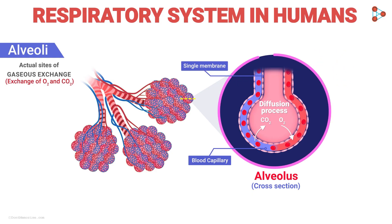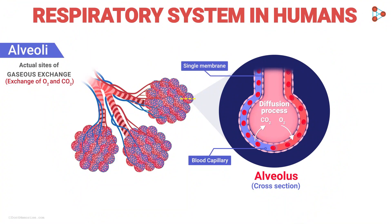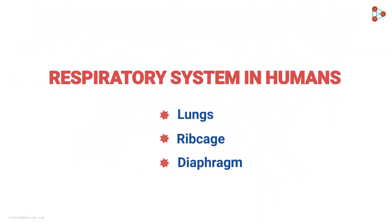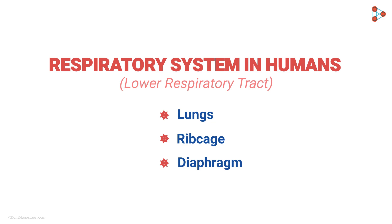This is how gaseous exchange occurs in each alveolus. Now that we know how the components of the respiratory system present inside the lungs work, let us focus on the lungs and the other remaining components of the lower respiratory tract in the next part.